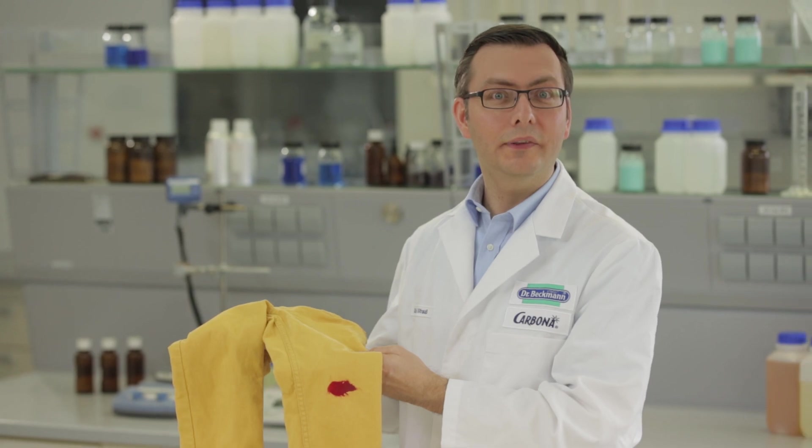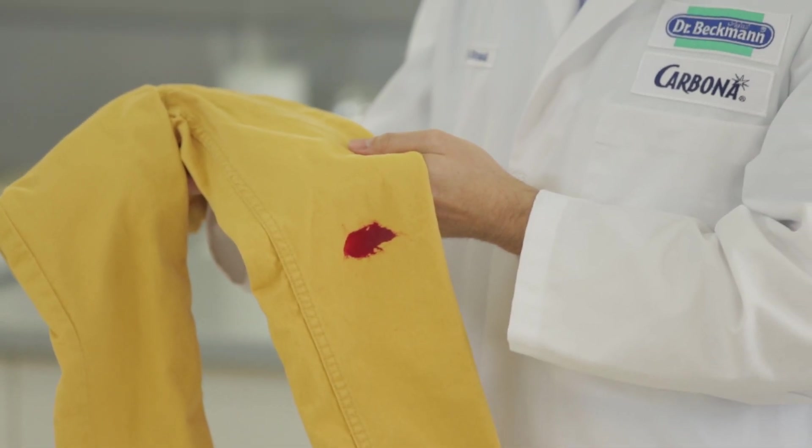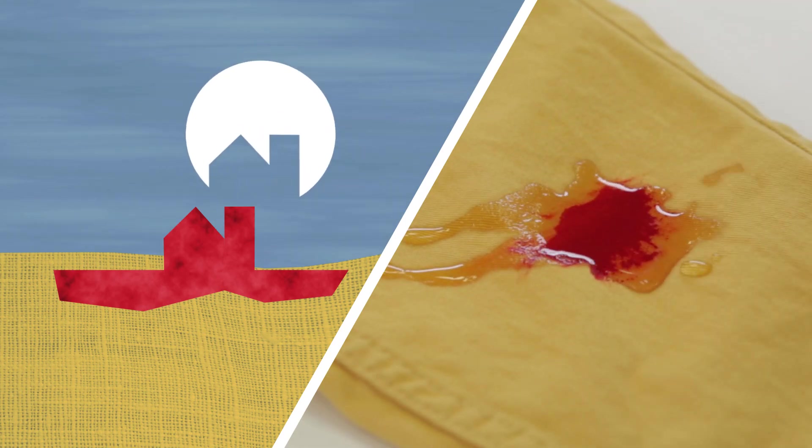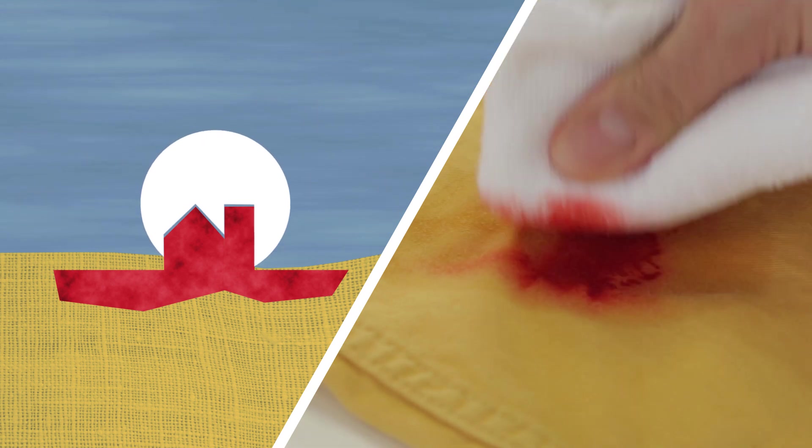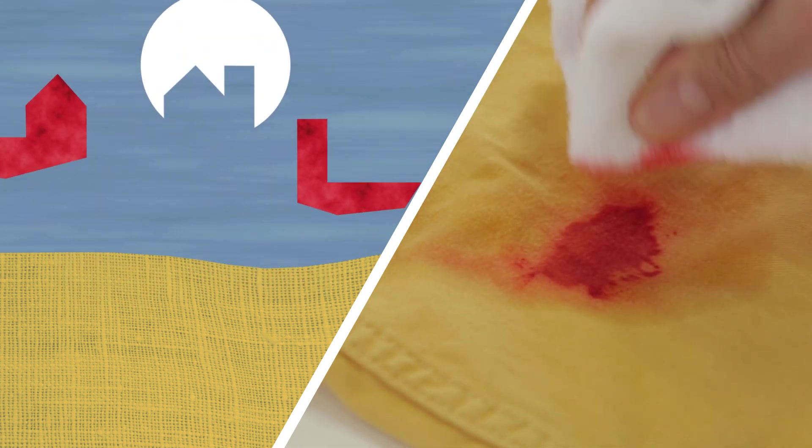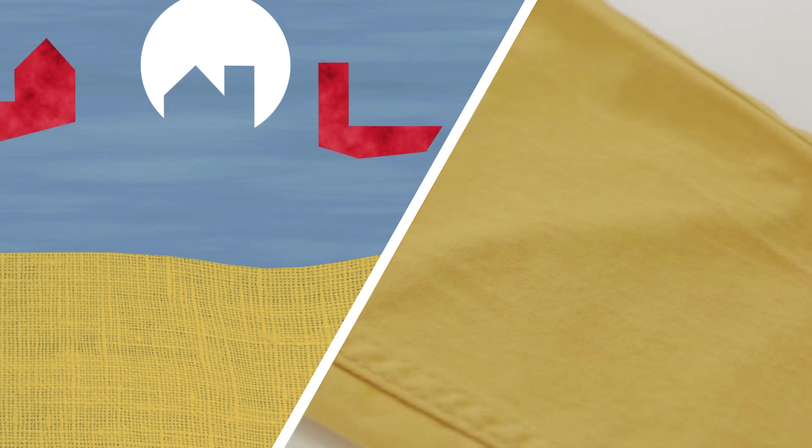When it comes to stubborn protein-based stains, such as blood, enzymes are required. Enzymes are made up of highly active proteins that speed up chemical processes. They work using a lock-and-key principle, breaking down long-chain stain molecules into smaller sized units, which can be removed from the fibers with minimal effort.